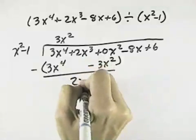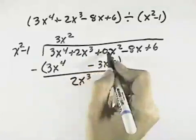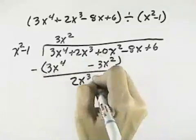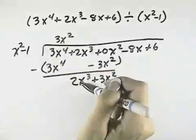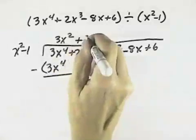There are no x cubed, so I still have my 2x cubed to bring down. 0 minus a negative becomes plus 3x squared. Now, x squared goes into 2x cubed 2x times, so that's plus 2x.